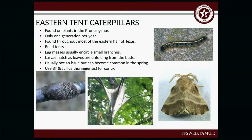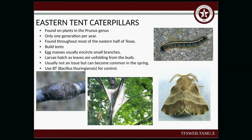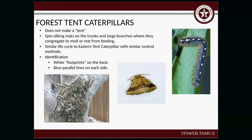The eastern tent caterpillar — we have two types of tent caterpillars in the state. This one does build tents; the other one doesn't. I saw a whole bunch of them earlier this spring at the park up in Springtown. Egg masses are usually encircled around smaller branches. The larvae hatch as leaves are unfolding from the buds. These are usually not an issue, but they do become common in the spring. You're going to use Bt or Bacillus thuringiensis for control. Pay attention to the moth — this one is lighter than the other.